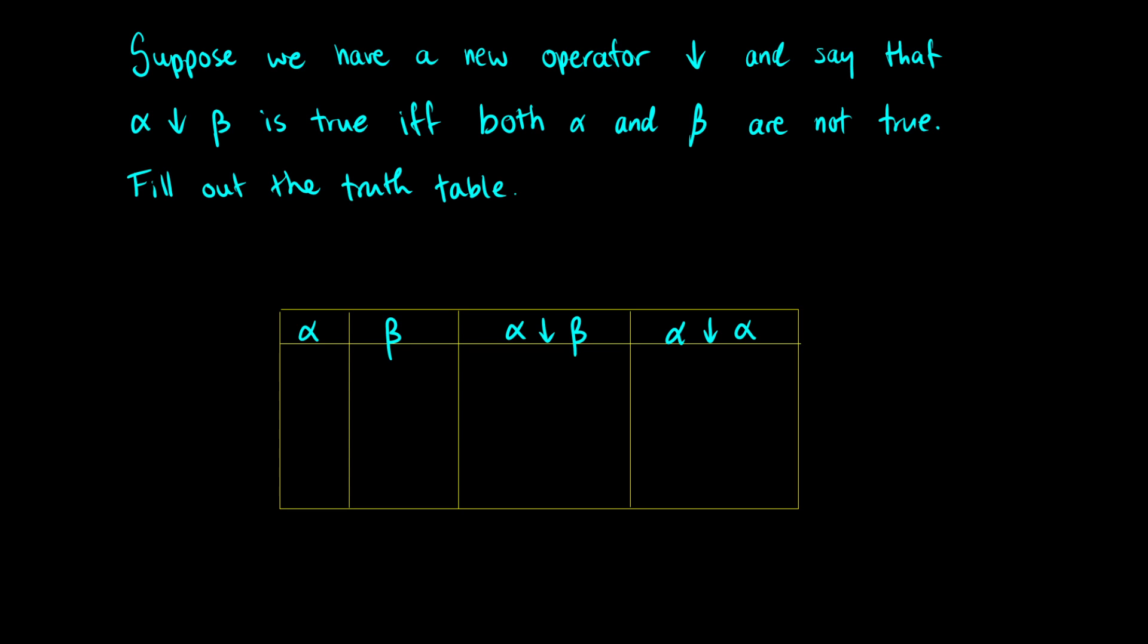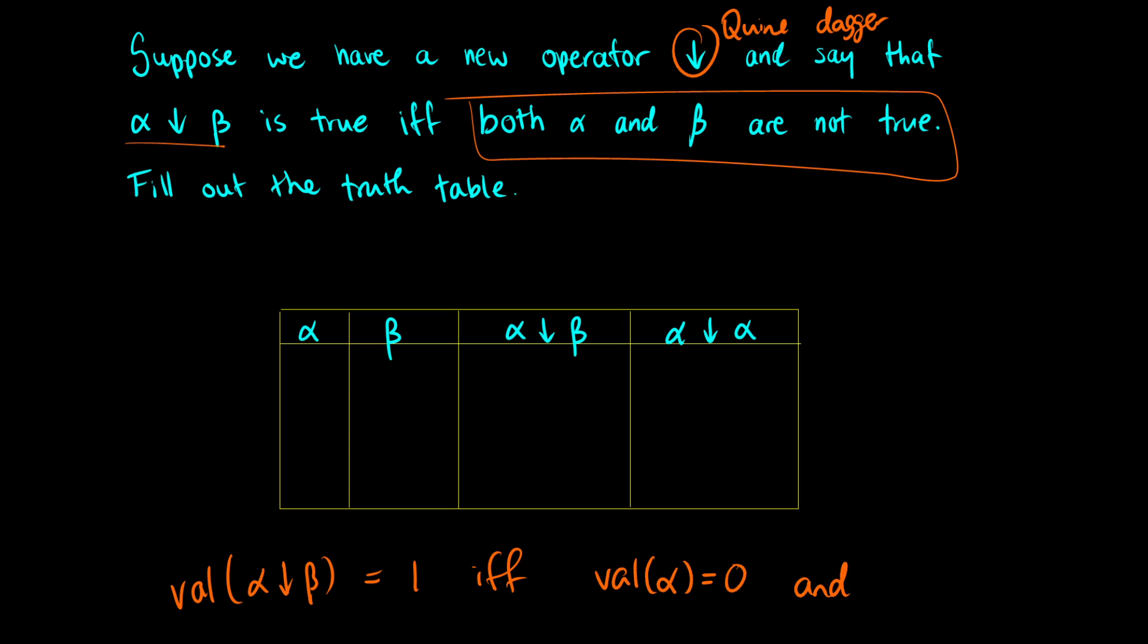So suppose we have a new operator, and we call this the Klein dagger. That's an official name for this, and the way this is defined, we say that alpha down beta is true if and only if both alpha and beta are not true. So basically, if we could write out a valuation for this, we'd say the value of alpha down beta is true if and only if the value of alpha is false and the value of beta is false. So that's a nice little formal way of writing this out.